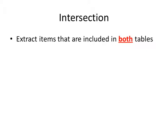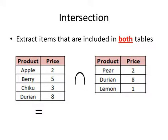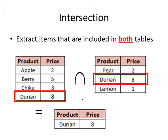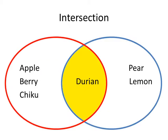The third operator is the intersection operator. It basically extracts the information that is included in both tables. Using the same two tables, the result of the intersection will be durian, because durian is the common data between the two tables. That is the result of the intersection operation. In the Venn diagram format, the durian is the yellow shaded area — the result of the intersection operation.